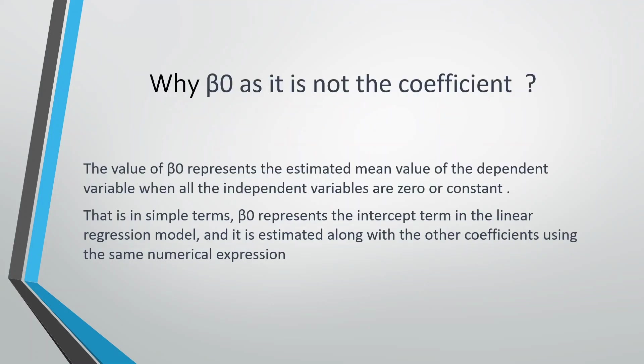Why beta0? As I have said, beta represents the coefficients of the independent variables. However, beta0 does not represent any coefficient of any independent variable. Beta0 represents the estimated mean value of the dependent variable when all the independent variables are constant or they are all 0.